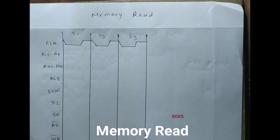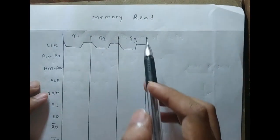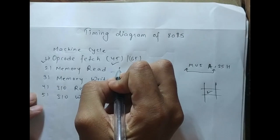Hello world, welcome to my new video. In the previous video we learned about the timing diagram of opcode fetch phase. In today's video we will learn about the timing diagram of memory read. Memory read consists of three T-states.